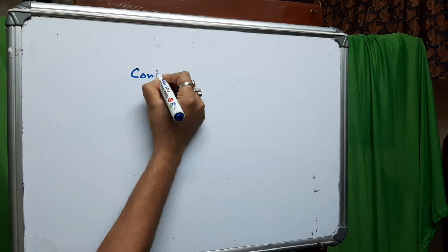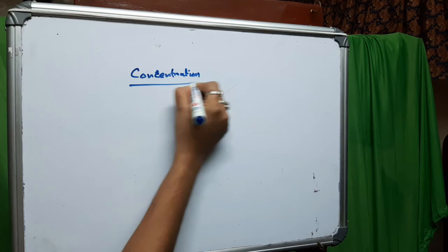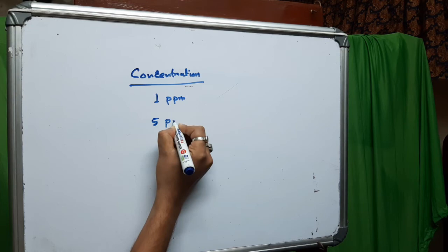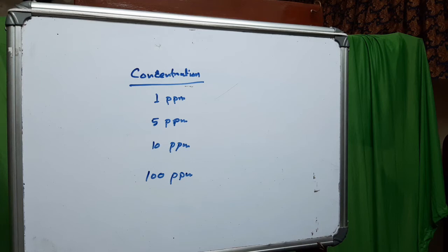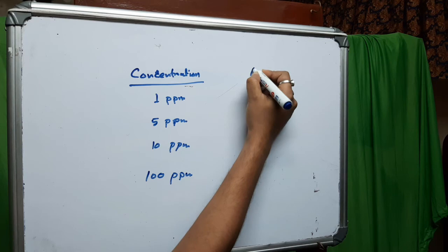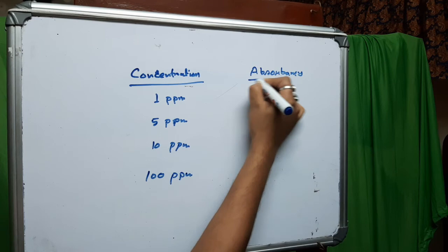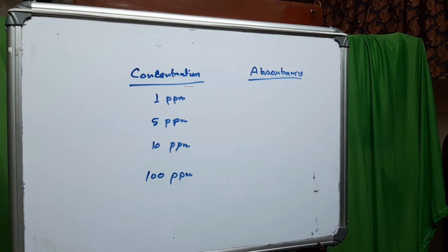First, we take different concentrations like 1 ppm, 5 ppm, 10 ppm, 100 ppm, etc., and measure the absorbance of each individual concentration using a UV spectrophotometer.